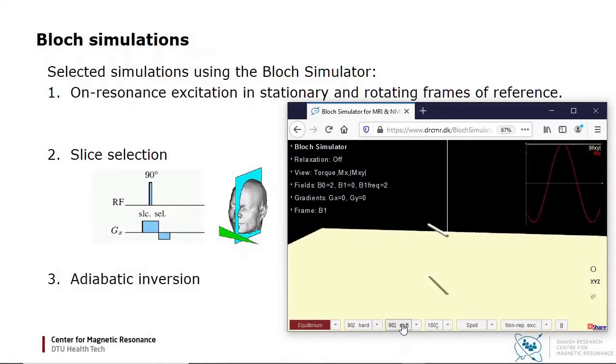If I apply another 90 degree pulse, I can rotate the magnetization further, for example to invert it.